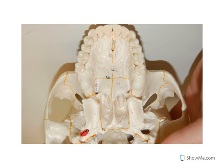Some of the other things that we can see here: the foramen ovale of the sphenoid bone, and a little foramen lacerum here. You can actually see the temporal process of the zygomatic bone here, and then the zygomatic process of the temporal bone coming off there. Those are the primary structures that we can see.